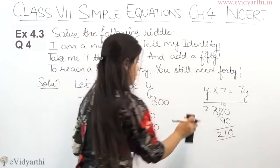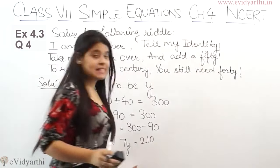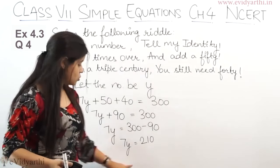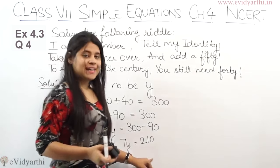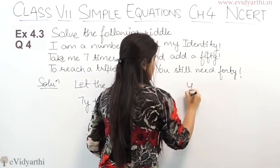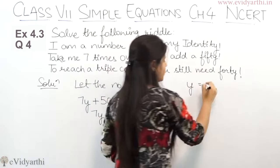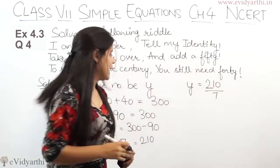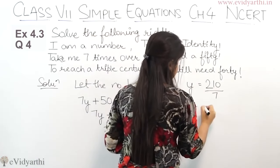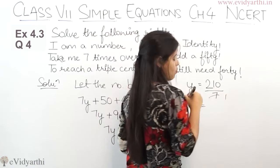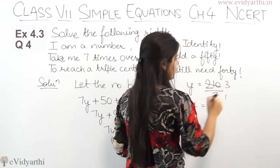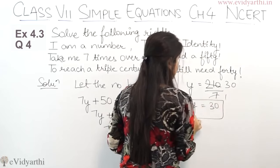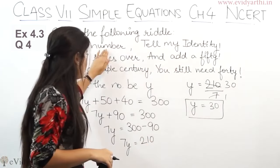So now yahan bhi 7Y hai aur ye 210 hai. So is 7 ko jahan multiply ho raha, isko jahan udher leke jayenge, toh wo divide ho jayega. So means Y will be equal to 210 upon 7. Ab 7 ko 210 se cut karte hain. 7 ones are 7, this is 7. 3's are 21 and 0. So we will get 30. Y equals to 30 means the number jo hame identify karna tha is 30.